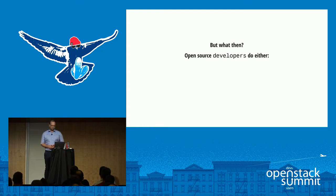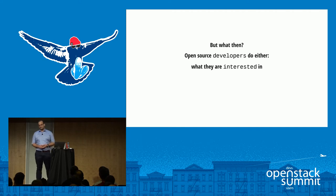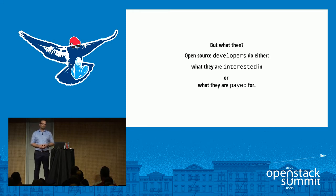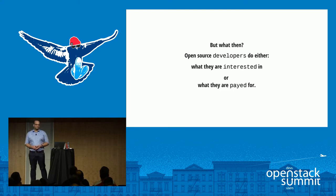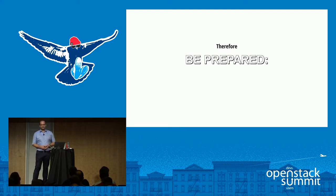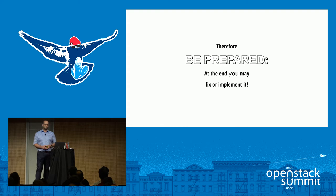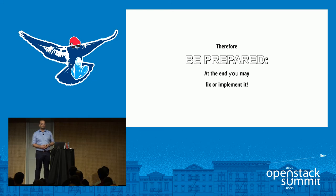What then? Typically, open source developers do either what they're interested in or what they're paid for — that applies to most open source communities. So if you have a bug and nobody upstream is interested or doesn't see the problem, you'll likely end up doing it yourself. You need to be prepared to fix or implement things yourself, otherwise probably nobody will do it unless somebody has the same problem and is paid to fix it.